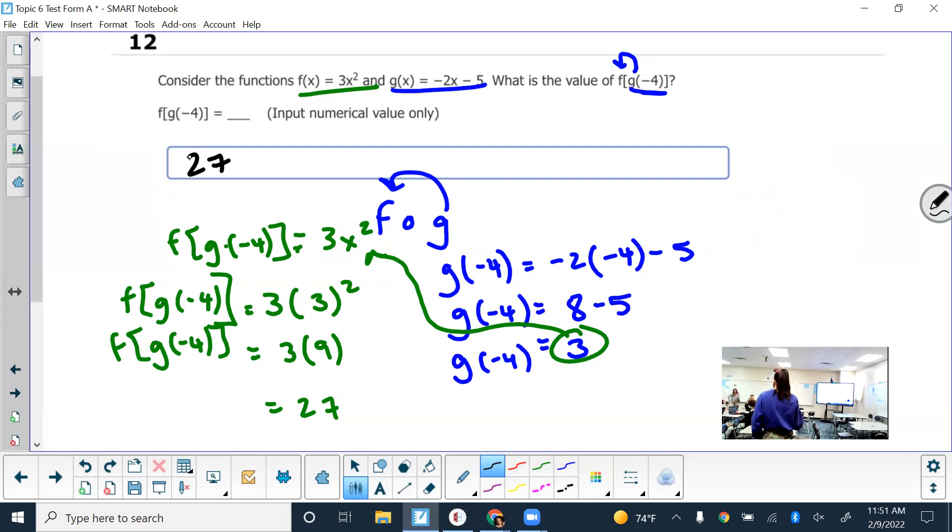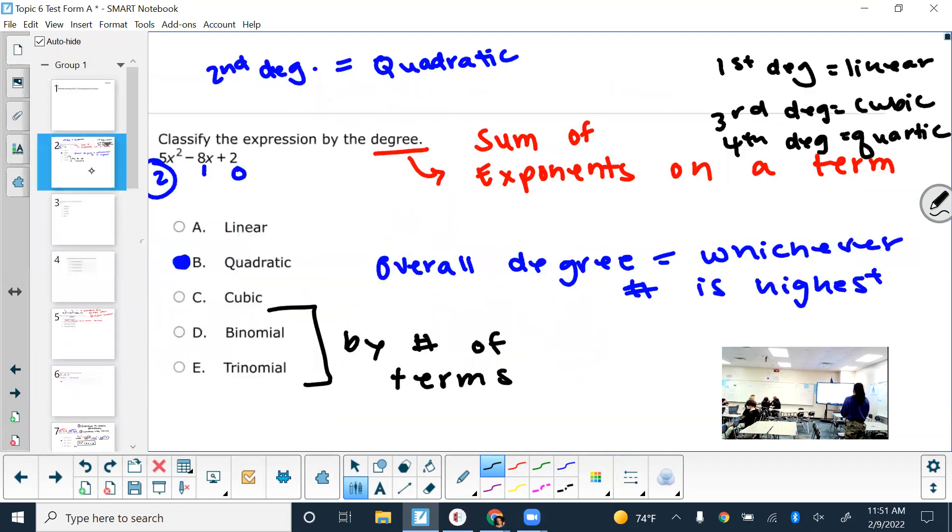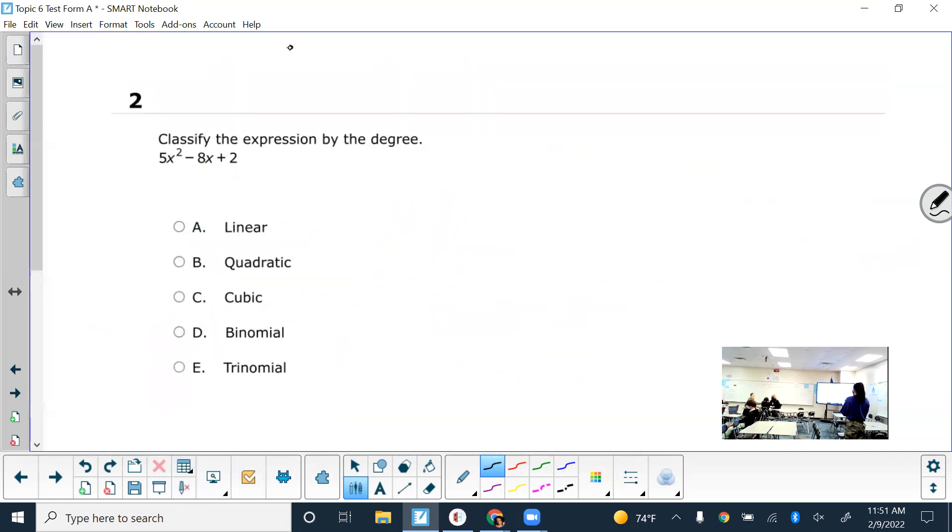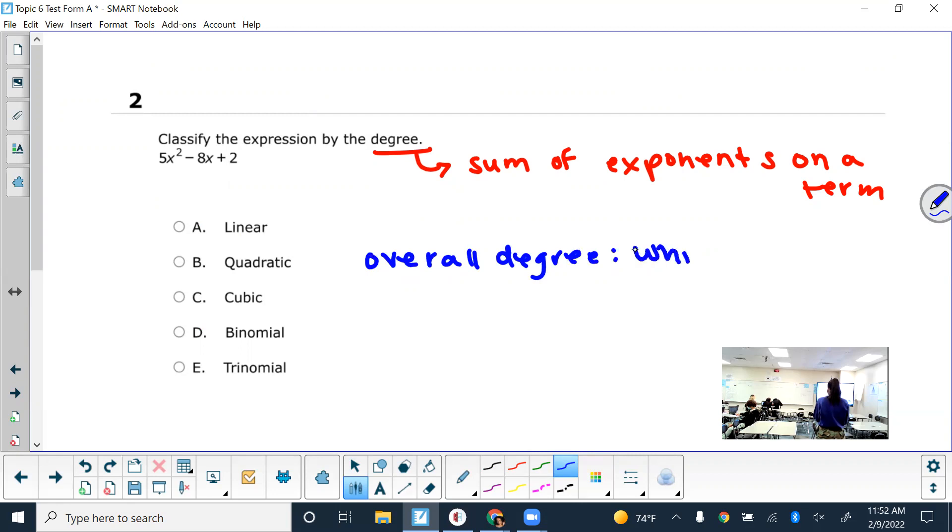Any questions on the test? Alright, so number 2. Good one to go over. It takes lots of stuff in this one. First, we need to classify it by degree. So degree means what in this unit? So we're talking about the sum of exponents on a term. So the sum of exponents on a term. And then your overall degree, which is what this is asking about. So your overall degree will be whichever one is highest.